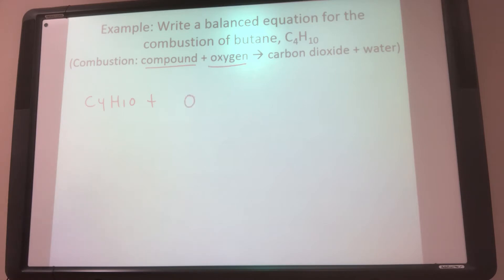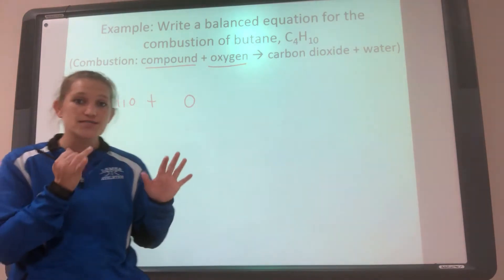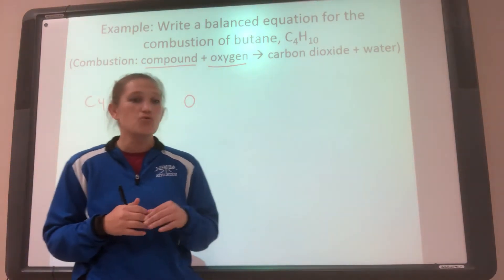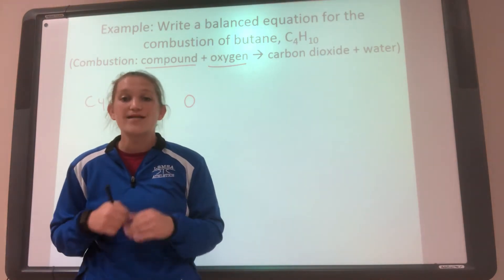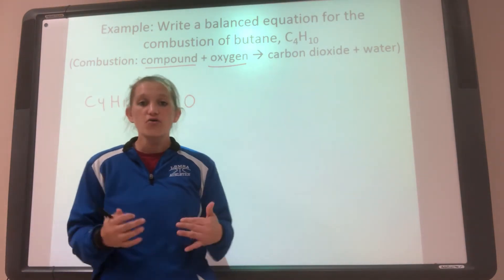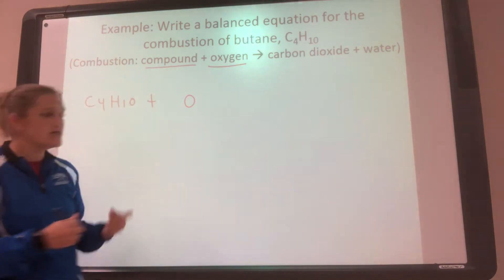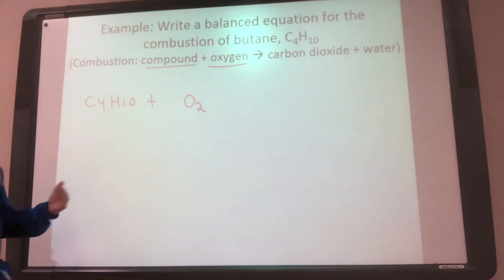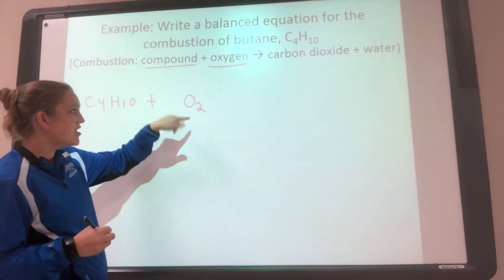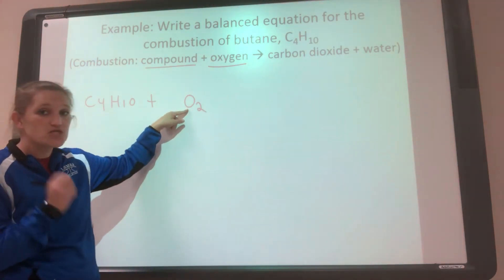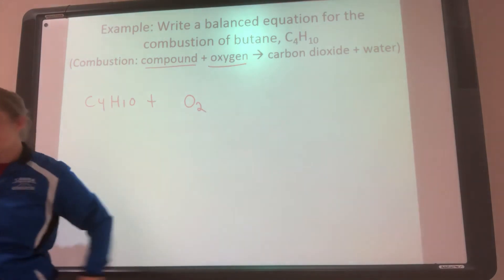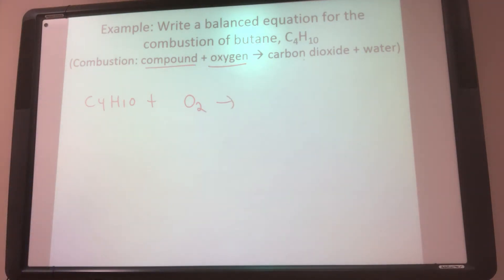So C4H10 plus oxygen. Now, we know the symbol for oxygen is O. But remember that we talked about the rule of seven, that there are seven elements that don't just exist as an element by itself, that it's diatomic. Those seven are going to exist in nature as two of them, two atoms, diatomic. So if it says oxygen, you better write O2 and not O. Because if you write just O, you're not going to be able to do this problem. It goes to carbon dioxide and then water.